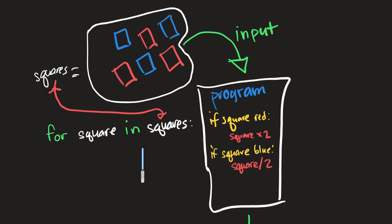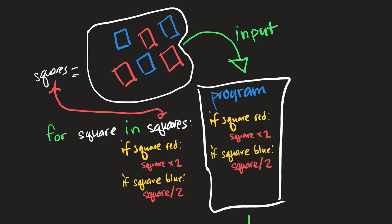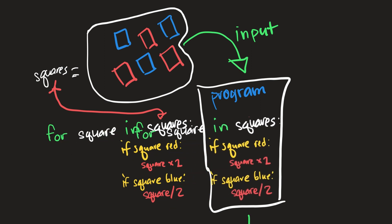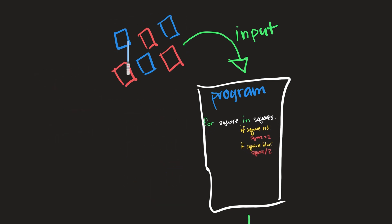Whatever is in this area is what's going to happen to each square inside of squares. This is a for loop — for every item in this group of items, we're going to do something. In our case, we want to do the same thing we're already doing for individual squares, but for all six squares. So instead of having the code repeated, we take this whole group and put it inside our program — and this is how we handle multiple items going into our program.